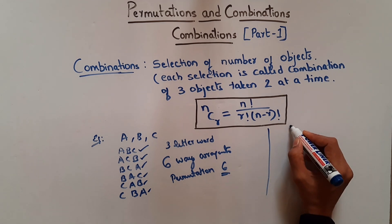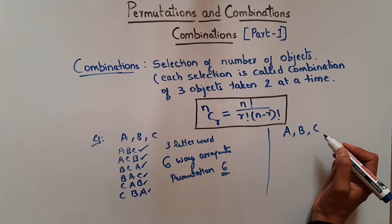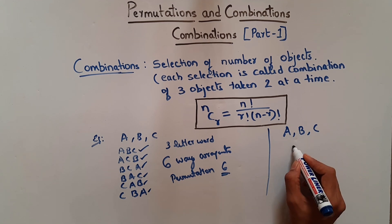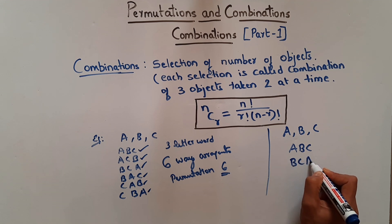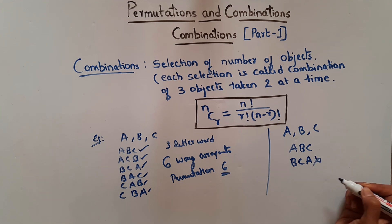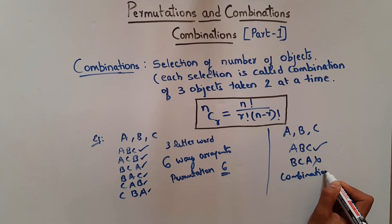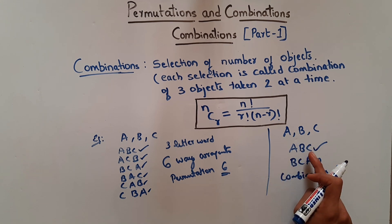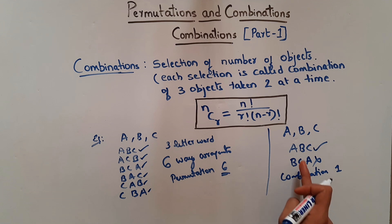Now for combinations: with letters A, B, C, how many combinations can you make taking three letters at a time? Only one combination — ABC. If I write BCA, it's still a combination of A, B, and C, so it's not a new one. Therefore only one combination is possible. This is a combination of three objects taken three at a time.